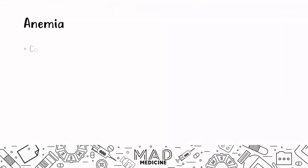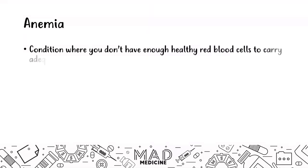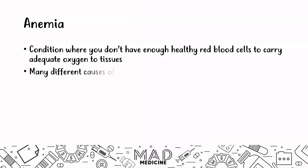So with that being said, let's talk about anemia. Anemia is a condition where you don't have enough healthy red blood cells to carry enough oxygen to your tissues. Now there are many different causes of anemia and there are also many different types of anemias.